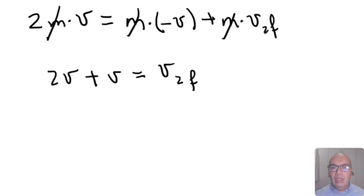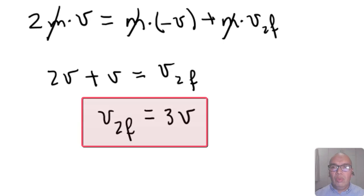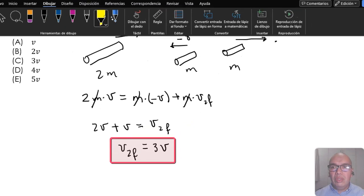Therefore, the final velocity of the second fragment is 3v, which is option C.